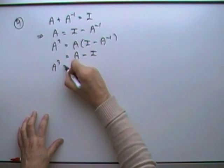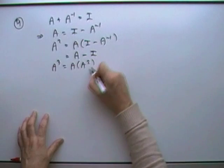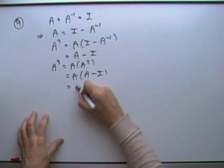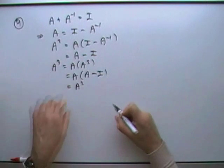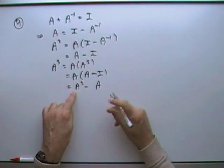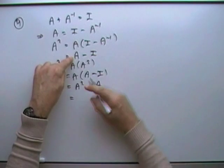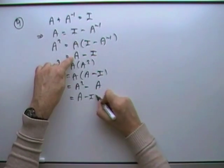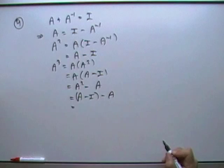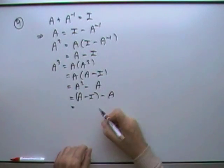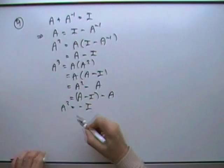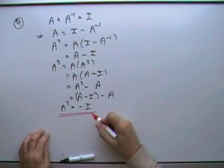Then A cubed would be A times A squared. So that would be A times A minus I. That gives A squared minus A, which I already know. A squared turned out to be A minus I, and A times I is just A. So substituting: A minus I minus A — the A terms cancel — and you're just left with negative I. So A cubed turned out to be negative I.